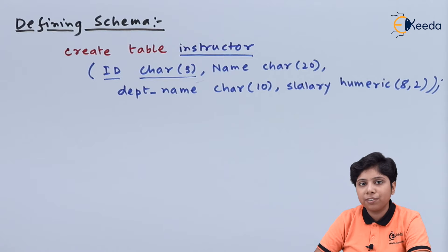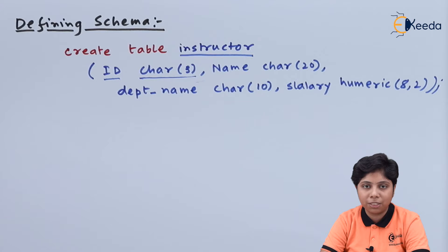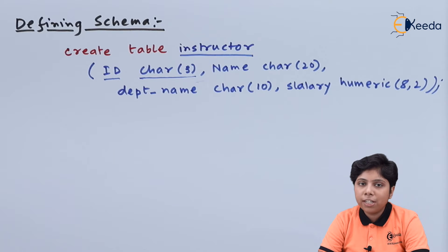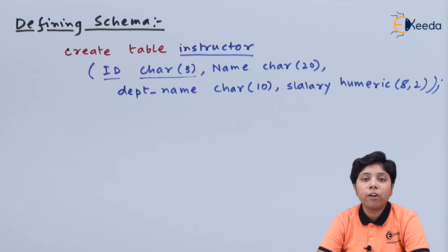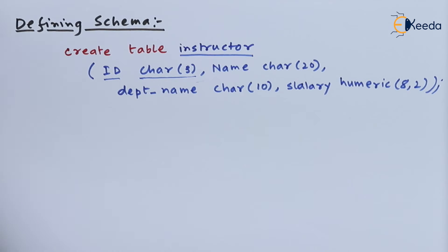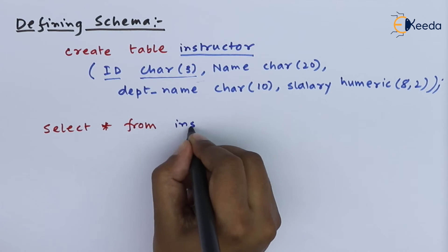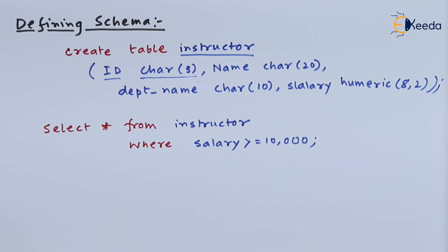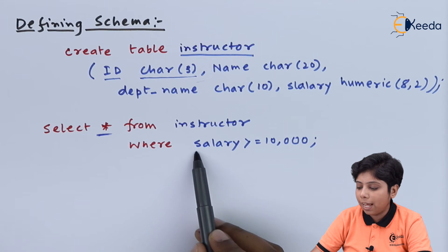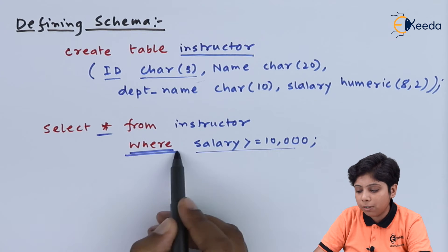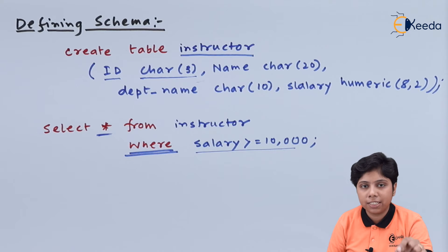Now we will see how to use a DML to maintain the relationship between instructor and department. For a simple DML example, say we are fetching salaries of instructors that are above 10,000 — fetching all names, department names, and salaries. We can write: SELECT * FROM instructor WHERE salary > 10,000. SELECT * means all data or records from the instructor relation, and the WHERE clause puts the constraint that salary is greater than 10,000, so only those records are fetched.